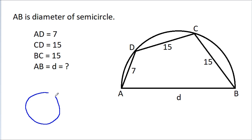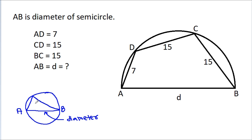In any circle, if AB is the diameter and we make any angle on the circle from AB, then it will be 90 degrees. So here, if we join BD, then this angle will be 90 degrees.